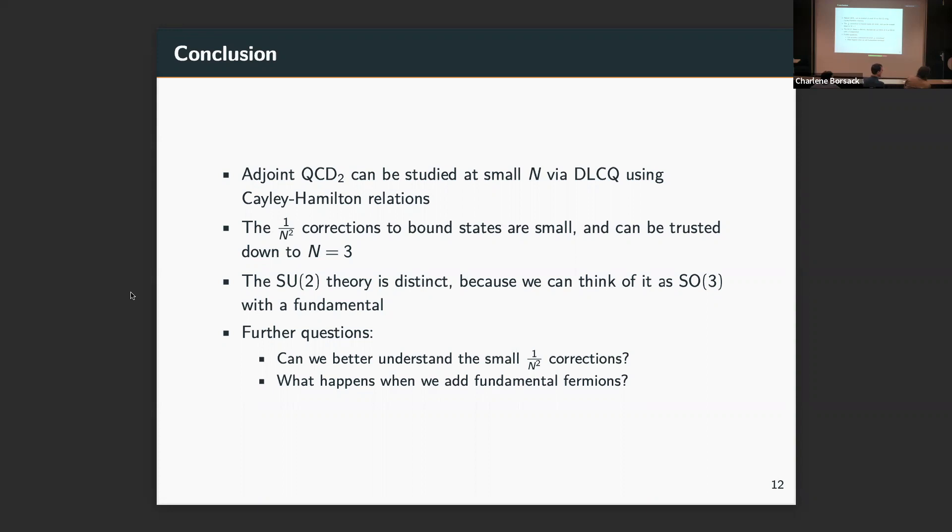All the states are multi-traces of two bodies, like mesons probably. That's true. Klebanov was able, because he took large N first, he was able to truncate to just one, but here you can have multi-traces and two bodies. That's this big simplification.